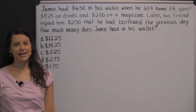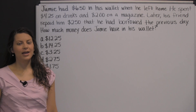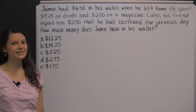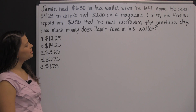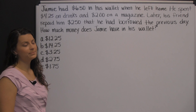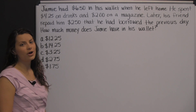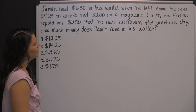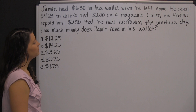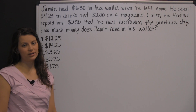If you're planning on taking the HiSET exam, then you need to be ready for word problems. Here's an example: Jamie had six dollars and fifty cents in his wallet when he left home. He spent four dollars and twenty-five cents on drinks, and two dollars on a magazine. Later, his friend repaid him two dollars and fifty cents that he had borrowed the previous day. How much money does Jamie have in his wallet?